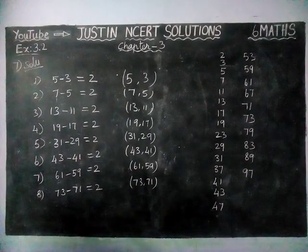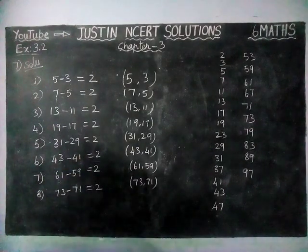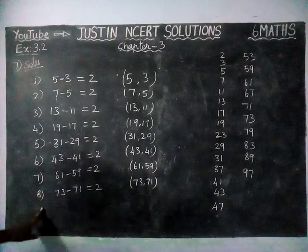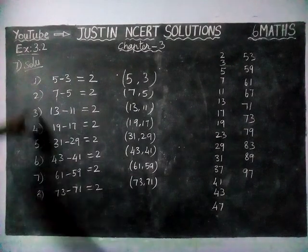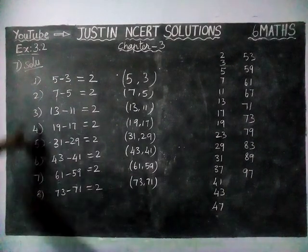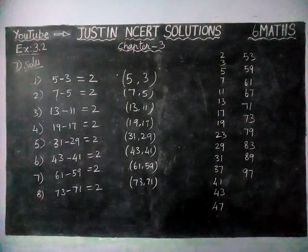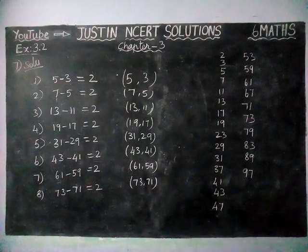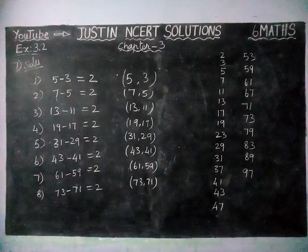Then 79, 83, 89 — no more twin prime pairs after that. So between 1 to 100, we have 8 pairs of twin primes in total. Kindly give your suggestions in the comments box, share it with your friends, and subscribe to our channel. Thank you.